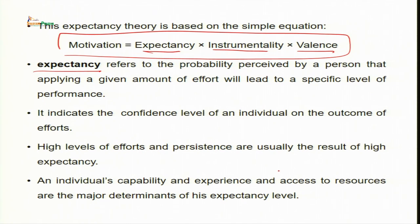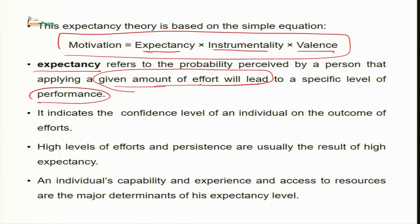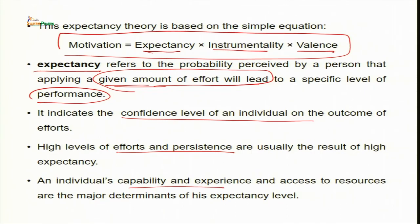Motivation is the resultant outcome of three variables: expectancy, instrumentality and valence. Expectancy refers to the probability perceived by a person that applying a given amount of effort will lead to a specific level of performance — for example, if I study for one hour I will be able to complete one chapter. It indicates the confidence level of the individual. High effort and persistence is usually the result of high expectancy, and an individual's capabilities, experience and access to resources are major determinants of expectancy level.